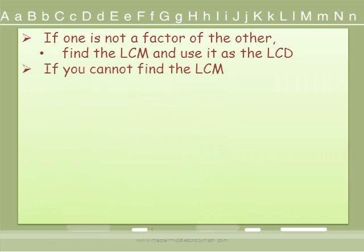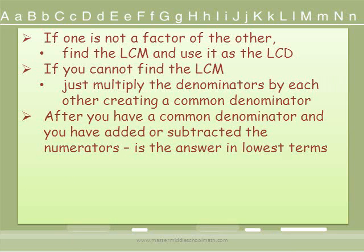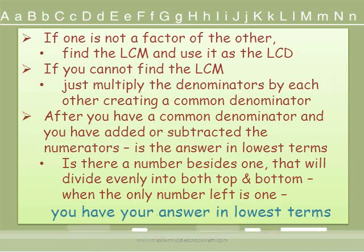If you are unable to find the least common multiple, it is okay. You can simply multiply the denominators by each other to create a common denominator. This number will be larger and may be a little more difficult to work with, but it will still work. After you have a common denominator and have added or subtracted the numerators, ask yourself: is the answer in lowest terms? Check whether any number besides 1 divides evenly into both the numerator and denominator. Once the only number that divides evenly into both is 1, you have your answer in lowest terms — you have finished the problem. Congratulations!